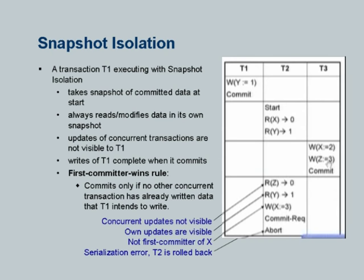T3 updated X. Now there is a conflict and this first committer rule says that the first guy to do the commit will succeed. So T3 came to commit first and it succeeds. Now when T2 tries to commit, it detects that T3 had already committed, but there is a conflict because the concurrent transaction had written the same data item — and therefore T2 cannot commit; it is not the first committer of X and it is forced to abort.